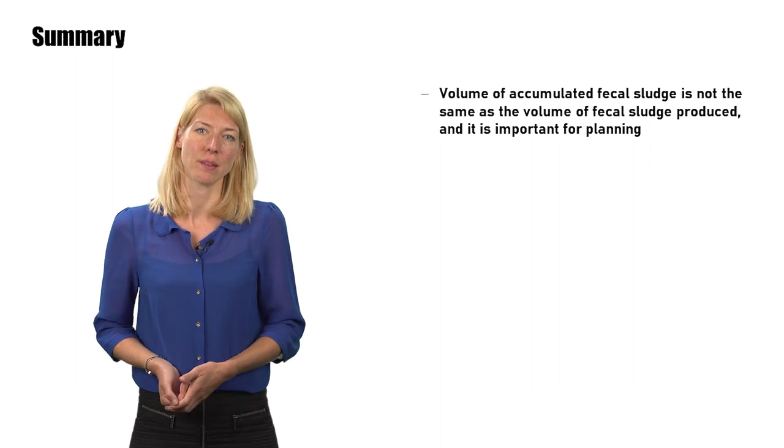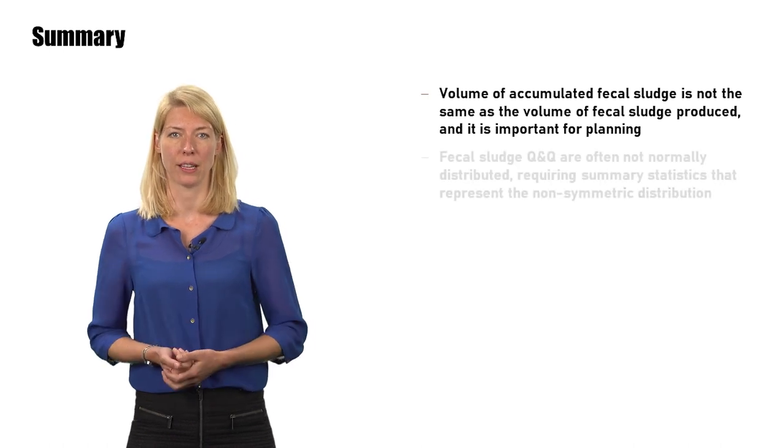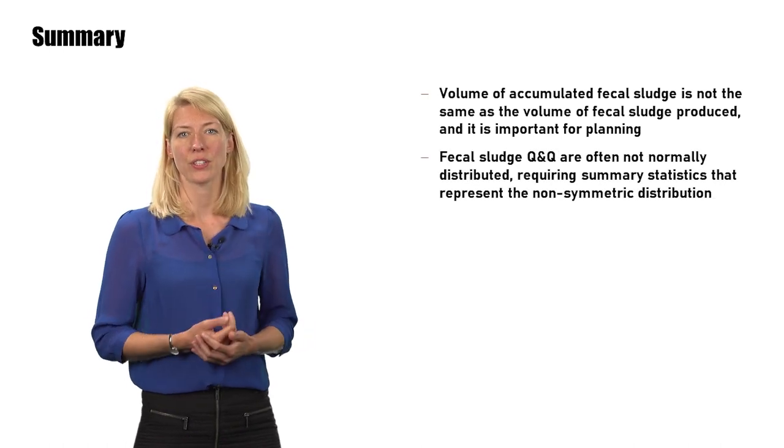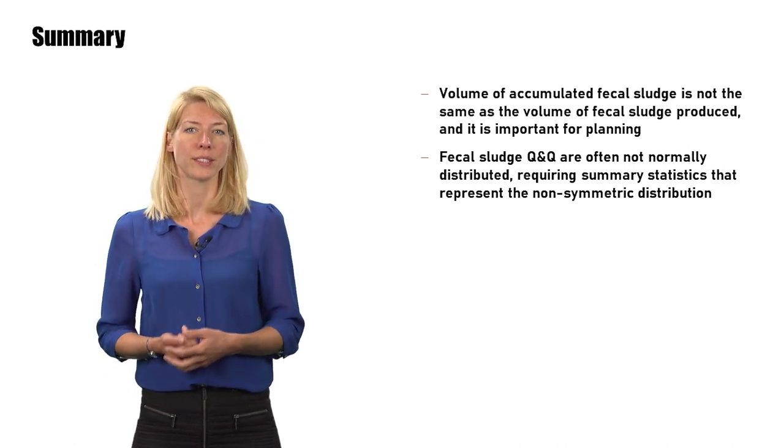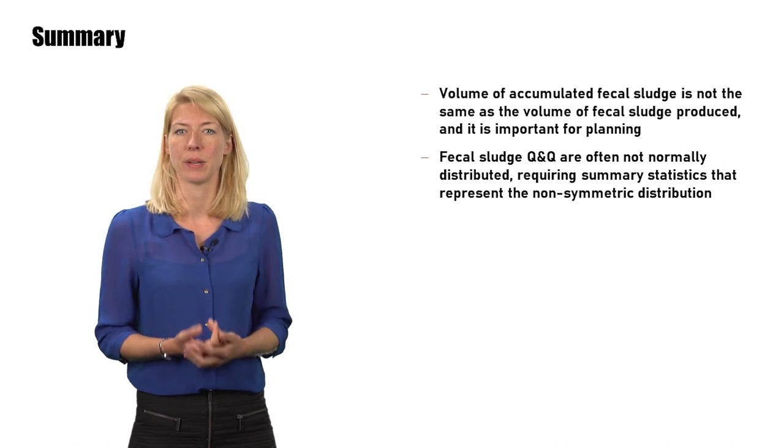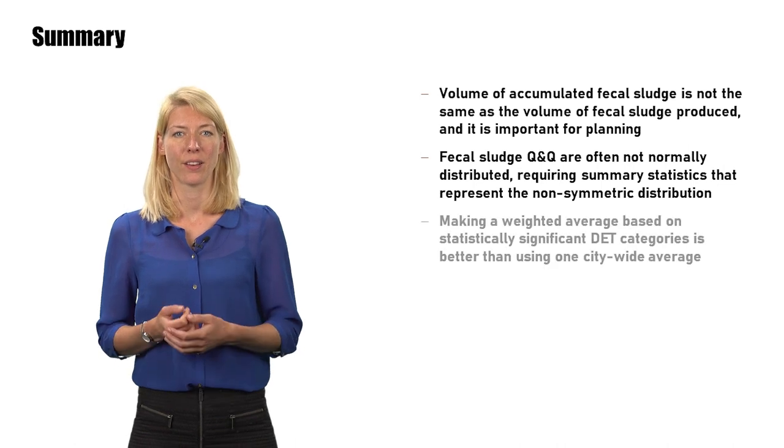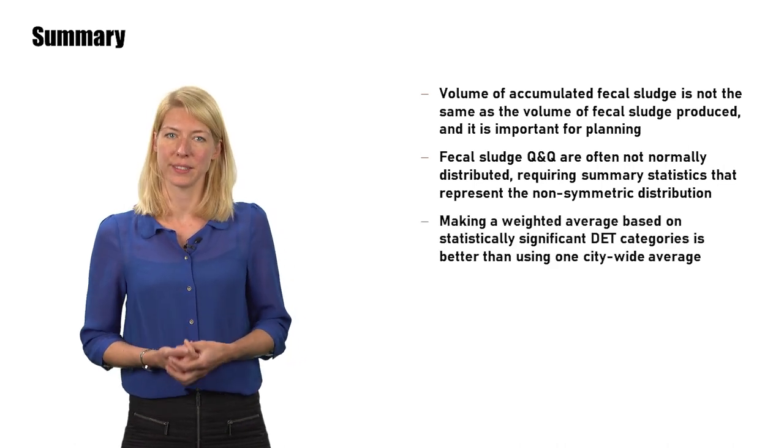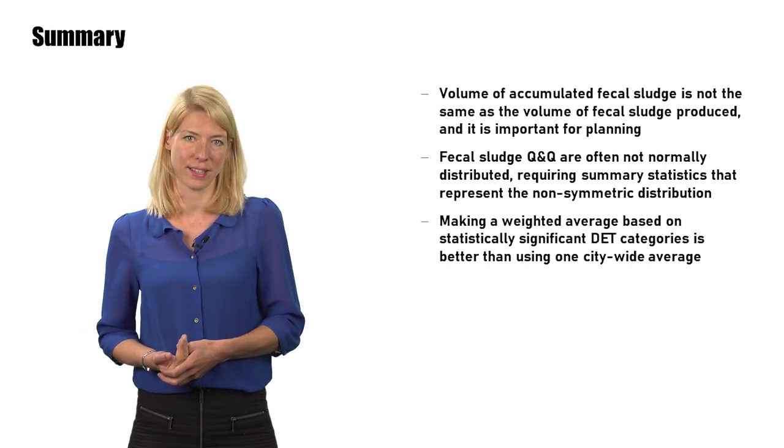To summarize, these are the key takeaways to remember after this module. The volume of accumulated fecal sludge is not the same as the volume of fecal sludge produced, but is highly important for current and future planning. Fecal sludge quantities and qualities are often not normally distributed, which requires summary statistics that represent the non-symmetrical distribution, such as the median instead of the mean. Making a weighted average based on statistically significant DET categories is better than using one citywide average.